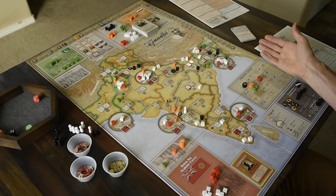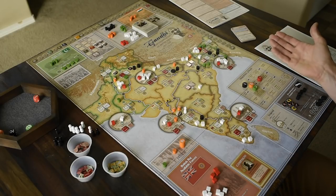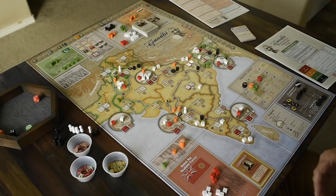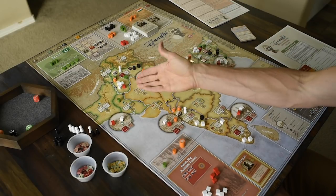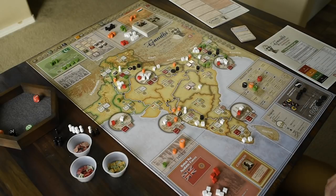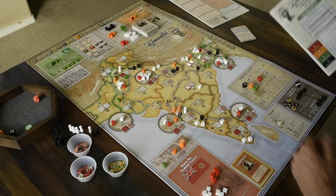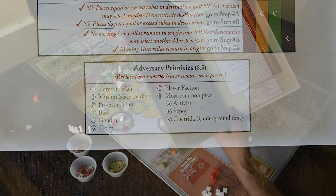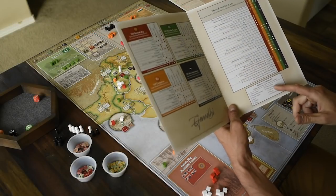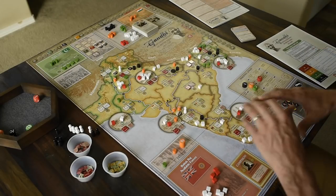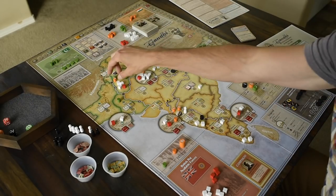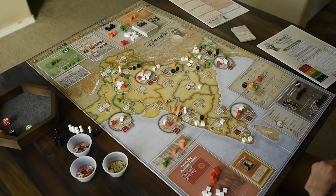Only troops can do the operation now, and we're still doing assault. The only other place we found earlier is Punjab — no need to go back through the selection tables. They do assault in Punjab, but without sepoys we can only use that single cube, which can arrest one of the two pieces: the Congress activist or the Muslim League piece. Using the adversary priorities table, a human player faction comes before most common piece. Since the non-player is playing everybody, we roll randomly — even for Congress, odd for Muslim League. We rolled odd, so the Muslim League piece is arrested.